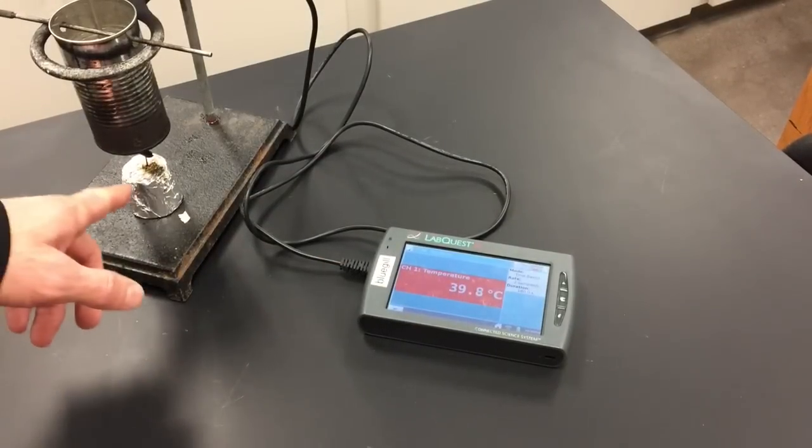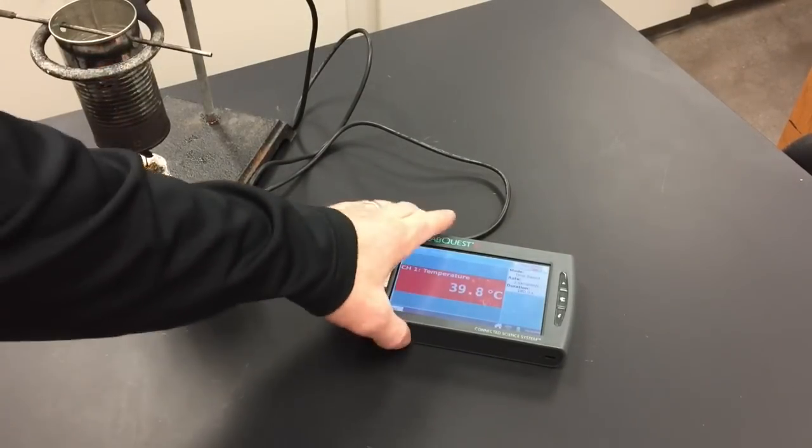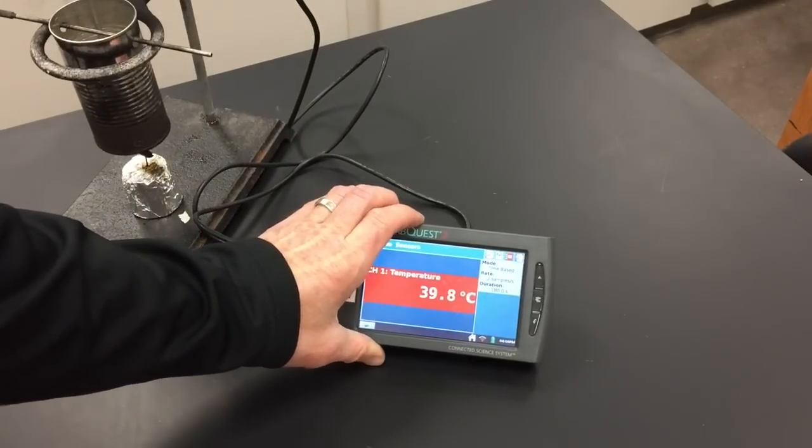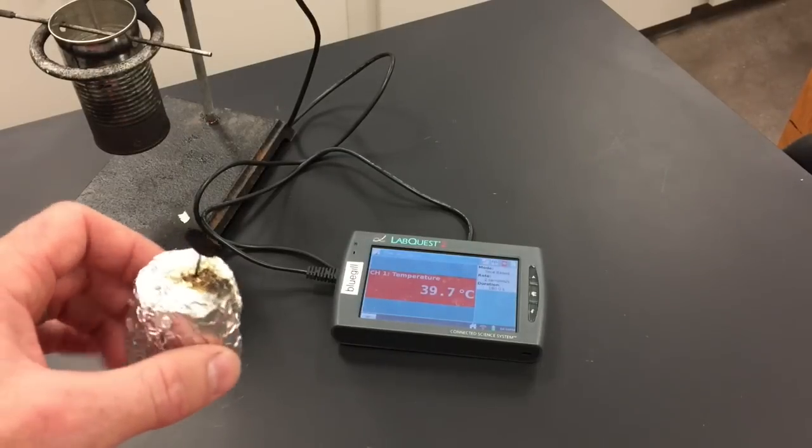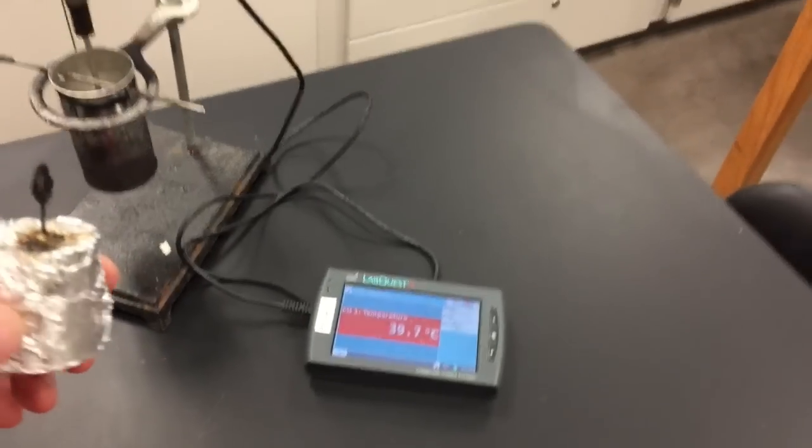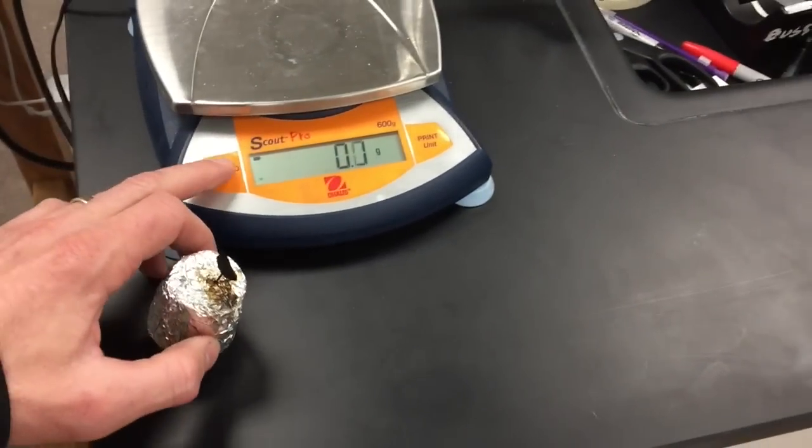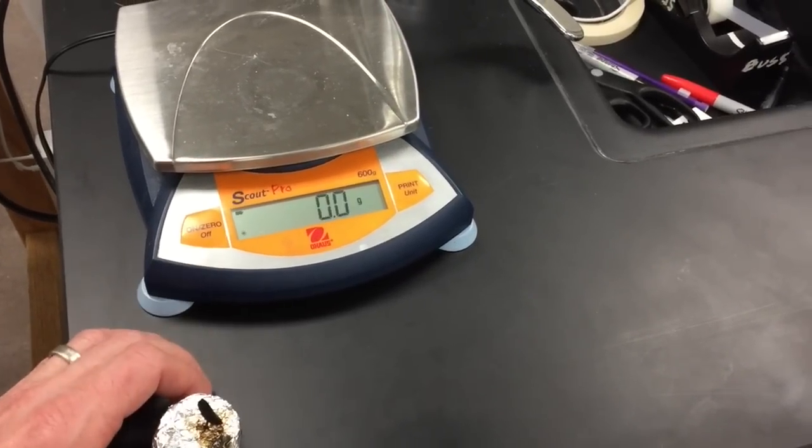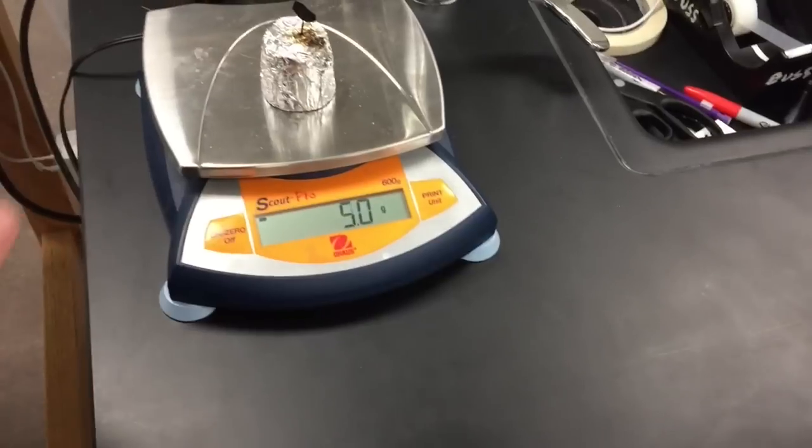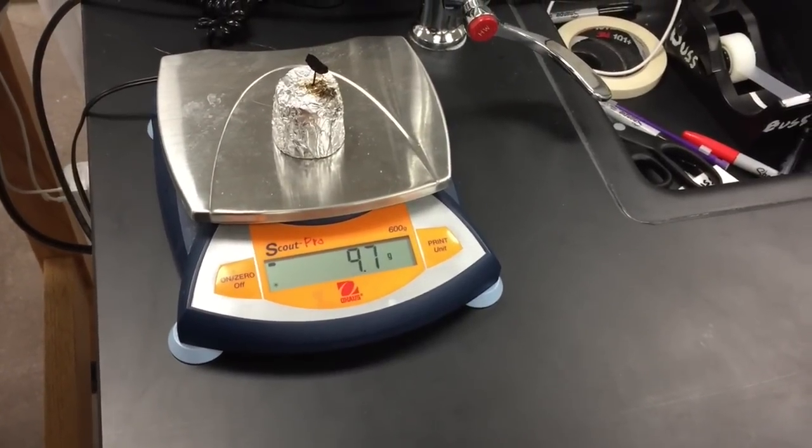Now that my food is completely burned, I need to write down the final temperature of the water before it starts cooling off again. Then I also need to know what the final weight of the food item burned was. So carefully I'll bring this over to the scale, make sure it's zero, and I'll write down the final weight of the food item.